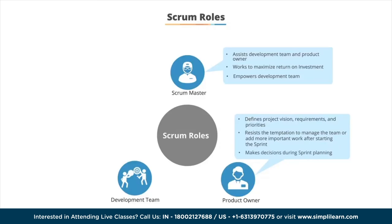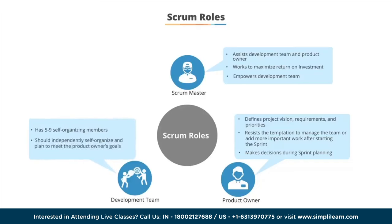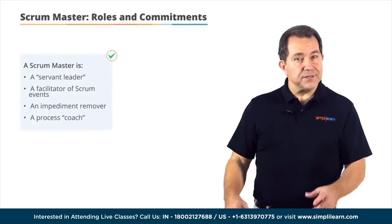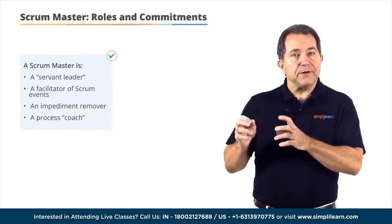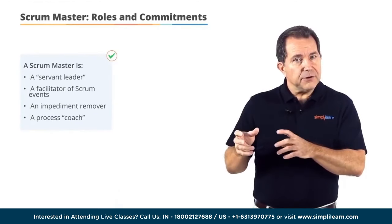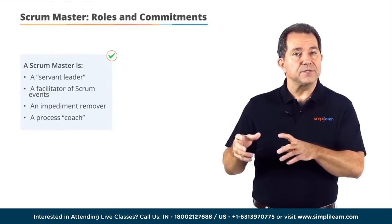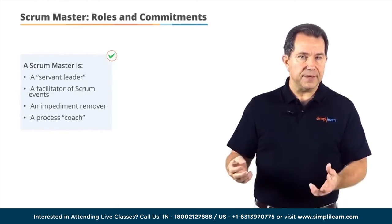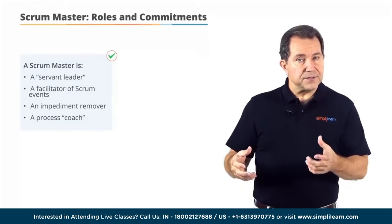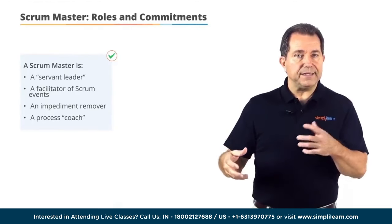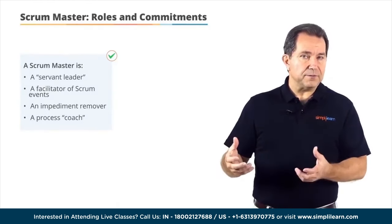The product owner must resist the temptation to manage the team or add more work after a sprint has begun, and must be willing to make hard choices during sprint planning. The development team comprises five to nine members with a mix of roles and has the autonomy to self-organize and choose how best to meet the product owner's goals. The scrum master is a skilled servant leader with very little formal authority, facilitating ceremonies such as sprint planning, daily stand-up, sprint review, and sprint retrospective.